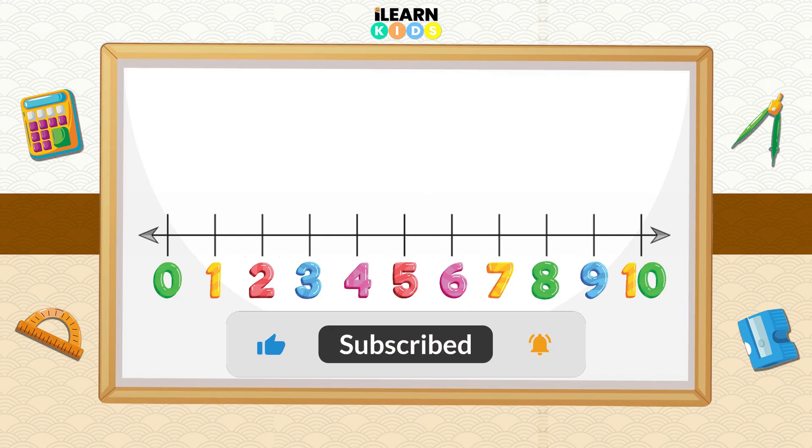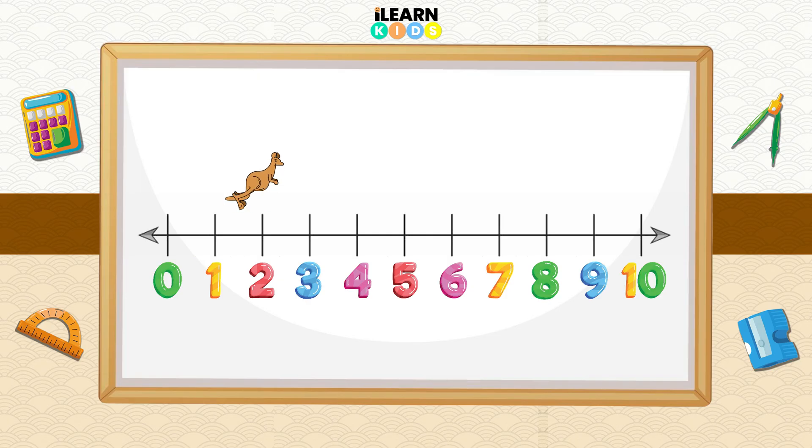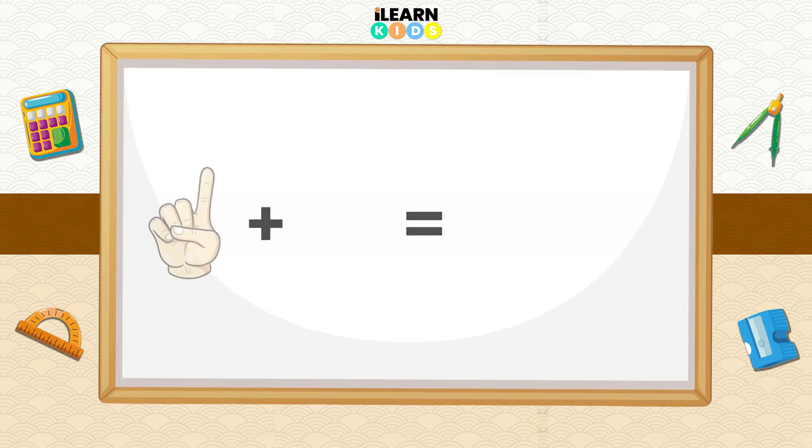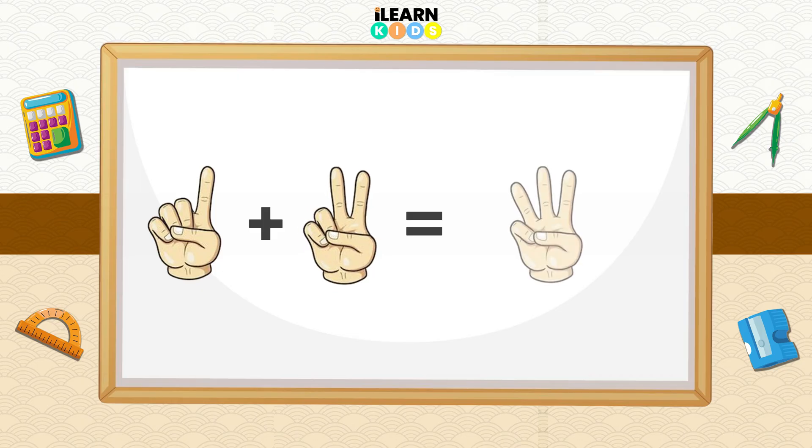Again, if I start at 1 and I jump 4 steps, where do I land? That's right, on 5! Amazing job! Now let's use our fingers. Finger counting: 1 finger plus 2 fingers. Count with me: 1, 2, 3.